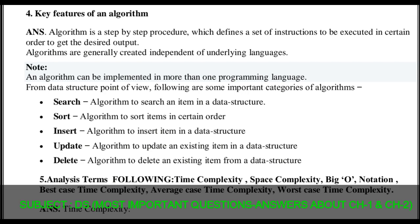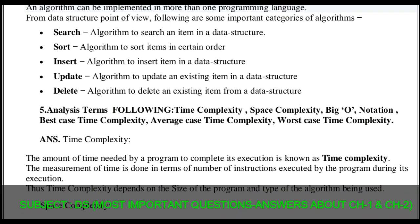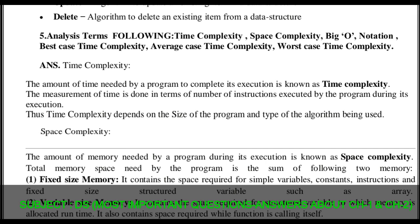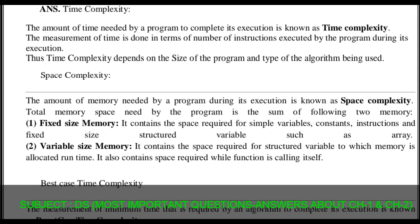Question number five: analyze the following terms — time complexity, space complexity, Big O notation, best case, average case, and worst case time complexity. Time complexity is the amount of time needed by a program to complete its execution. The measurement of time is done in terms of the number of instructions executed by the program during its execution. Thus time complexity depends on the size of the program and the type of algorithm being used.